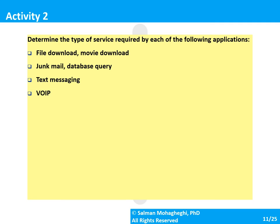For junk mail or database queries, the reliability and quality of service needs are much lower. In junk mail, the sender may send thousands of messages and doesn't want acknowledgements crowding its network. For database queries, if the query doesn't go through, you just send it again. So the lowest quality of service — unreliable connectionless — is sufficient here.